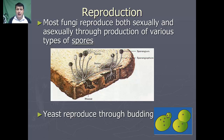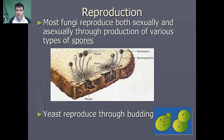In terms of reproduction, most fungi will have both a sexual and asexual stage within their life and they'll reproduce through various types of spores. Yeast, on the other hand, because of being unicellular, they'll reproduce through a form of mitosis which we call budding.